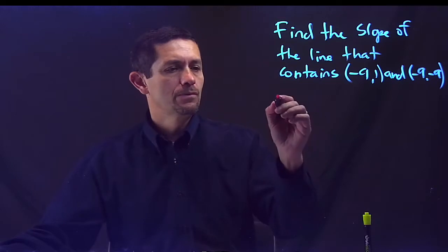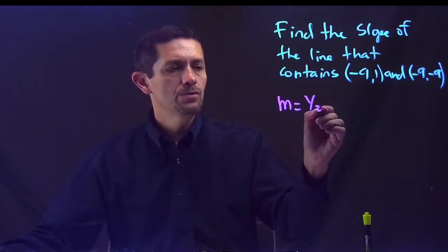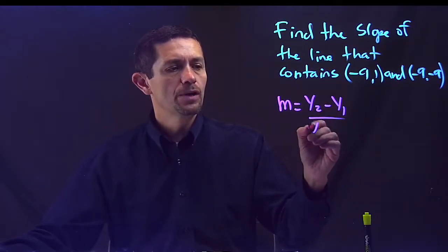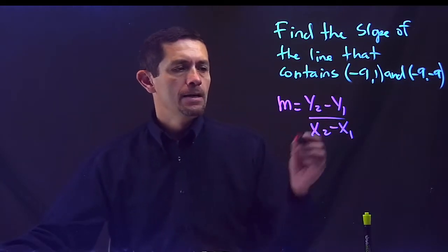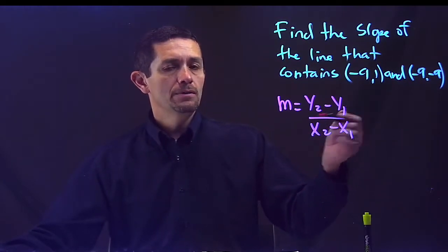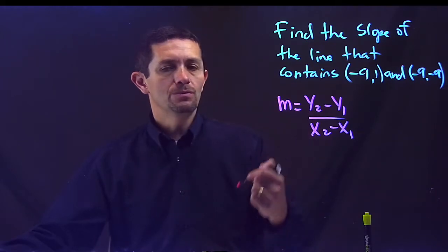The formula for the slope of the line is y2 minus y1 over x2 minus x1. y1, x1 is one point, x2, y2 is another point.